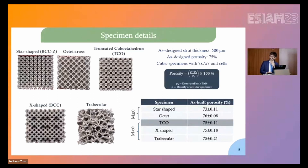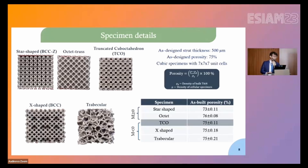As you can see, we printed five topologies selected from an extensive literature review highlighting the most promising topologies from a biomedical application perspective. All topologies have the same as-designed strut thickness of 500 microns, which was found in previous work to be a threshold value below which manufacturing imperfections detrimentally impact fatigue strength. All specimens also have the same as-designed porosity of 75%, which is optimal from a biomedical standpoint.